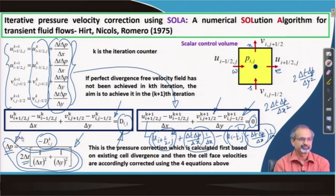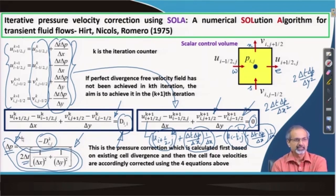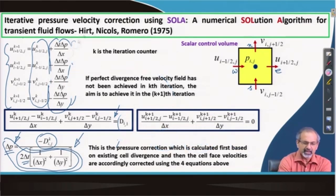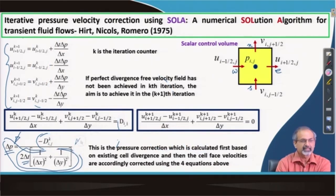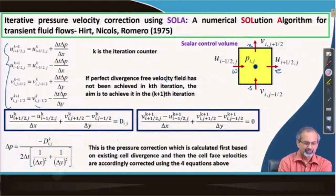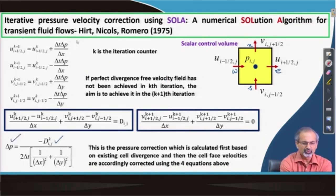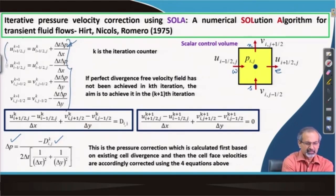We have therefore generated an equation for delta p in terms of the dilatation of the cell, the time step, and the geometric details — the grid spacings delta_x and delta_y. Now the idea is to feed back this value of delta p into those four equations, and that is how you can take your velocities to the next iteration level. For each and every cell, with the current iteration levels you can compute D; once D is known, delta p is known; and if delta p is known, you can substitute it into all four equations to generate all the updates.